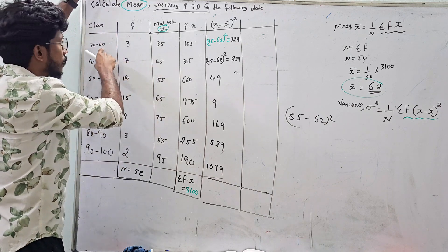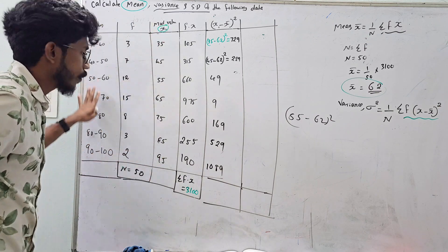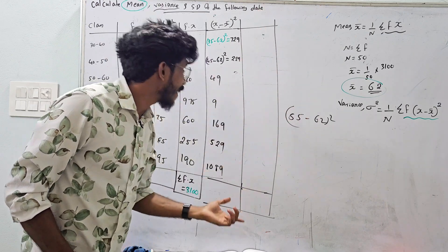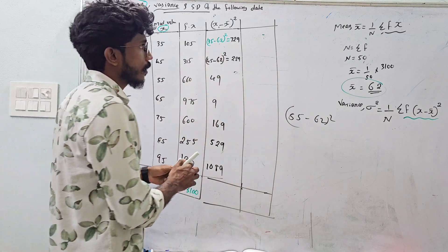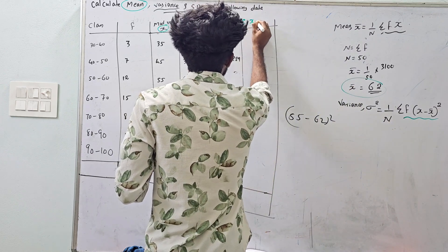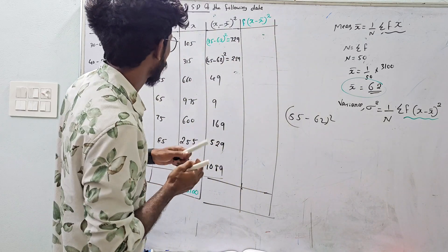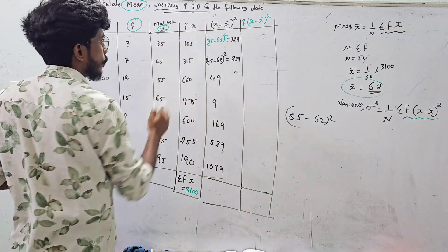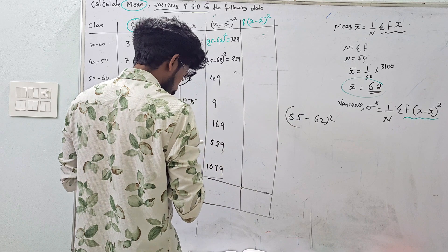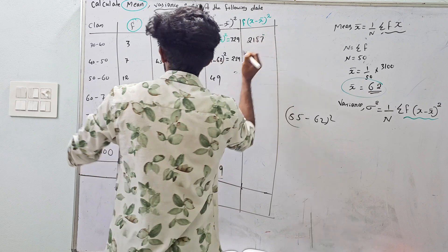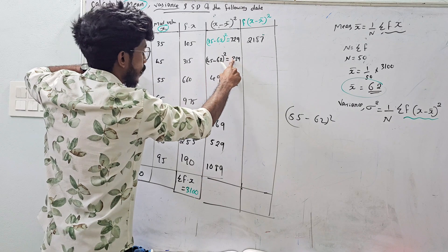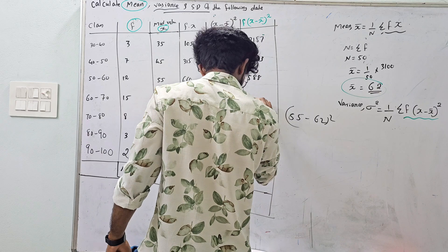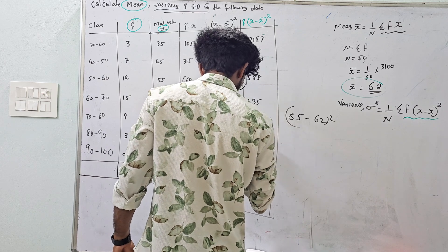Our value — the mean, x̄ — is the middle value. Here we have x and x minus x̄. We compute f into (x minus x̄) the whole square. That is x minus x̄ the whole square. For example: 3 into 720; 2 times 188; 7 into 290; f into (x minus x̄) is 2 times 223, giving 558.